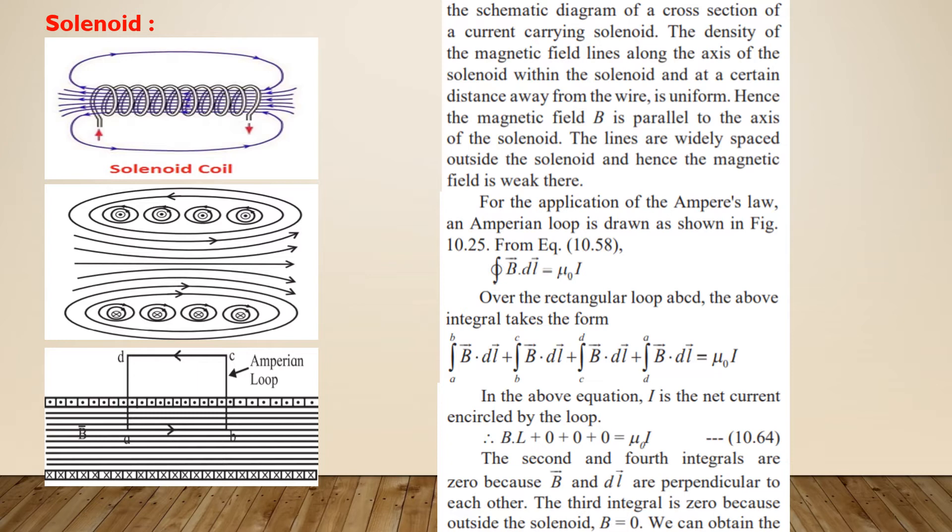Figure 2 shows the schematic diagram of cross-section of a current carrying solenoid in which the magnetic field lines are shown. As you can see, the field lines along the axis and within the solenoid and up to certain distance away from the wire are almost parallel. It indicates that the field inside is uniform.